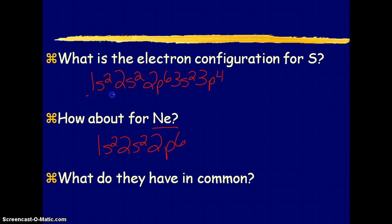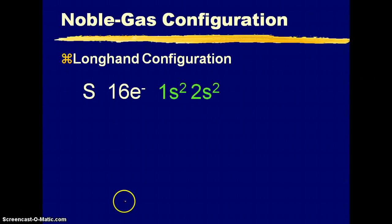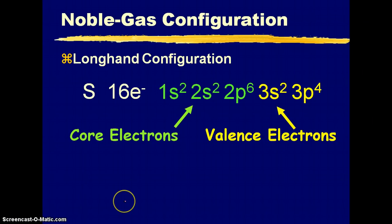Well what do they have in common? You notice that they both have all the way up to neon's electron configuration in common. We can use that and take advantage of that to use a shorthand electron configuration.